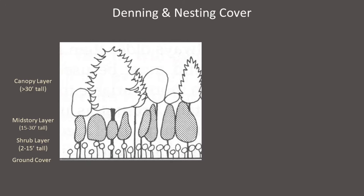Birds that don't nest in cavities typically hide their nest within specific vegetation layers of different habitats. When you are outside, start looking for the presence or absence of vegetation within four primary layers. Starting from the ground, look for the ground cover layer, which includes any herbaceous plants and woody plants growing less than two feet tall, as well as any fallen logs, stones, and leaf litter.